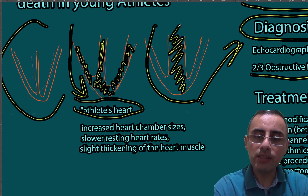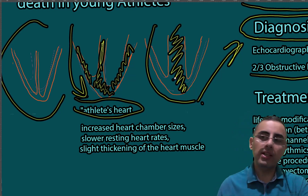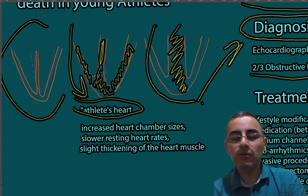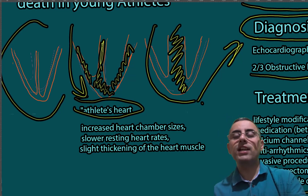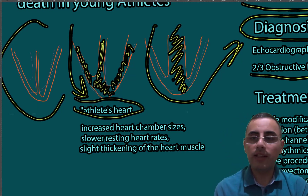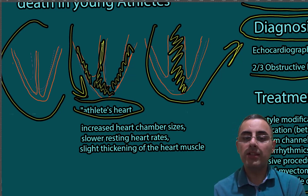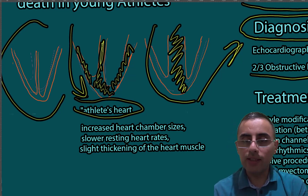In contrast, hypertrophic cardiomyopathy presents with a much thicker septum in many cases — that is the main difference. However, on echocardiogram it is often difficult to differentiate athlete's heart from hypertrophic cardiomyopathy, which is why this disease frequently goes undiagnosed and the first symptom can be sudden cardiac death in athletes.